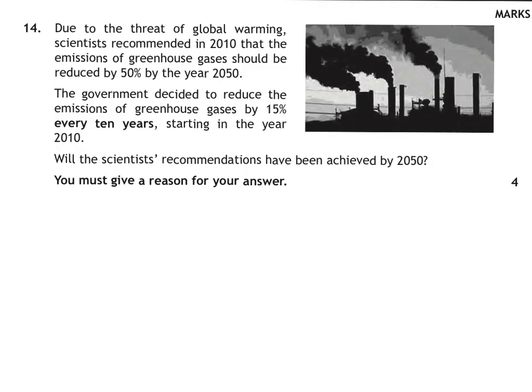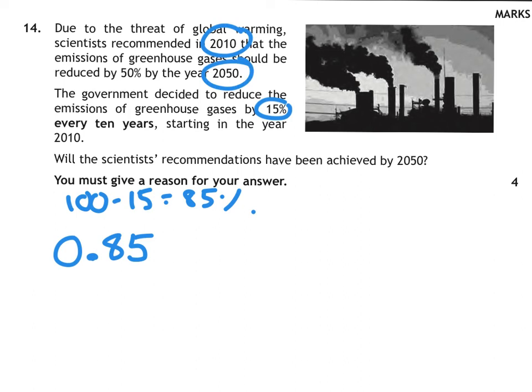Question 14. Due to the threat of global warming, scientists recommended that emissions of greenhouse gases should be reduced by 50% by the year 2050. The government decided to reduce the emissions of greenhouse gases by 15% every 10 years, starting in the year 2010. Will the scientists' recommendations have been achieved by 2050? Notice, first off, there is absolutely no details about the number of emissions here. But let's pretend we did with the number of emissions. If we were going to reduce something by 15%, what would we use? Well, you would do 100 take away 15 is 85%. And 85% as a decimal would be 0.85. Now, it said every 10 years. So from 2010 to 2050 is 40 years. How many 10s is that? That's 4. So we'd use the power of 4.